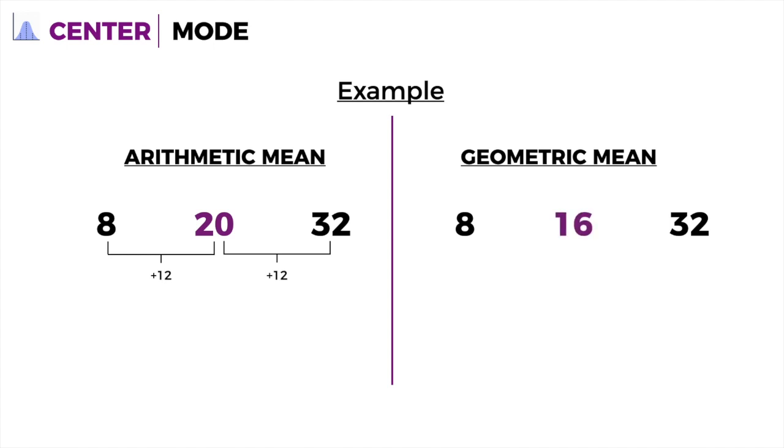Notice the difference between the two. If in arithmetic mean, the difference was defined by adding or subtracting 12, in geometric mean, it's defined by multiplication or division by 2. When 8 is multiplied by 2, you get 16. And 16 multiplied by 2, you get 32. Or 32 divided by 2 is 16, and 16 divided by 2 is 8.